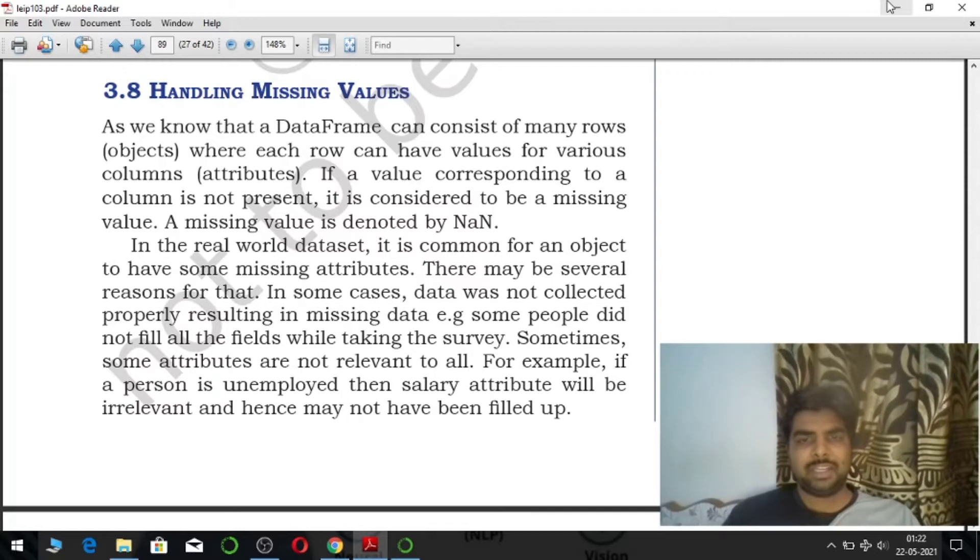In the real world data set, it is common for an object to have some missing attributes. There may be several reasons for that. In some cases, data was not collected properly resulting in missing data. For example, people did not fill all the fields while taking the survey. Sometimes, some attributes are not revealed to all. For example, if a person is unemployed, then salary attribute will be irrelevant and hence may have been filled up.